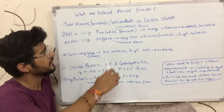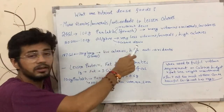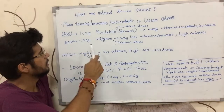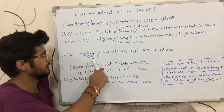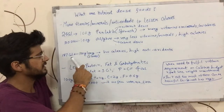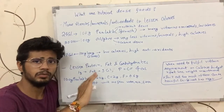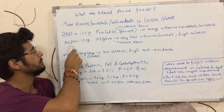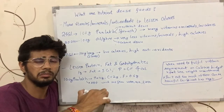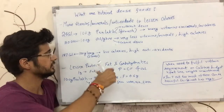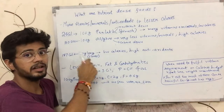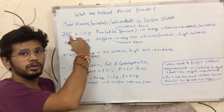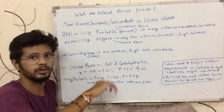Oil or ghee is a calorie dense food — it takes less space but has a lot of calories. Another example is cloves. 100 grams of cloves is about 187 calories, but it will give you a lot of antioxidants. Compare that to 100 grams of oil at 900 calories, which gives you almost no antioxidants. So cloves in just 187 calories give you a lot of antioxidants — they are nutrient dense compared to oil or ghee.